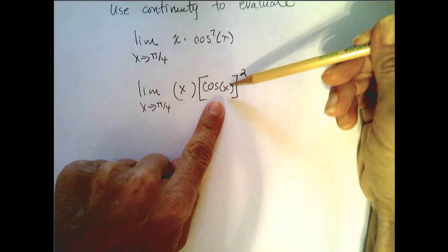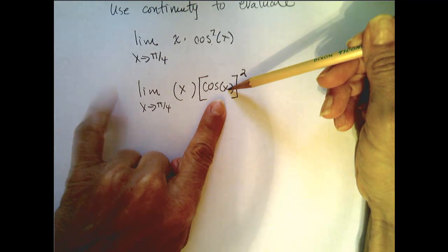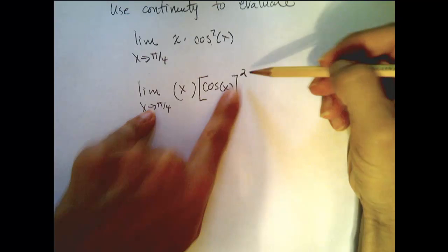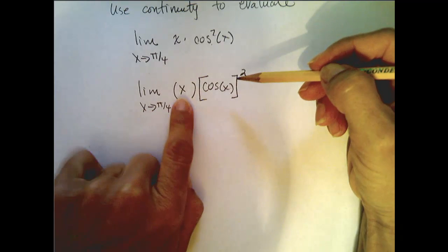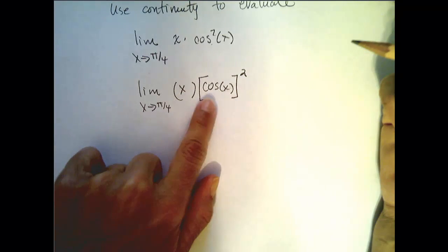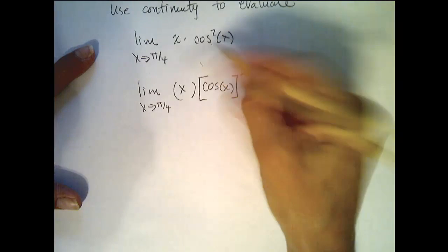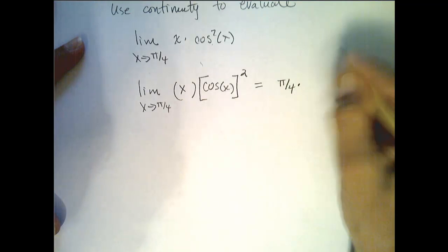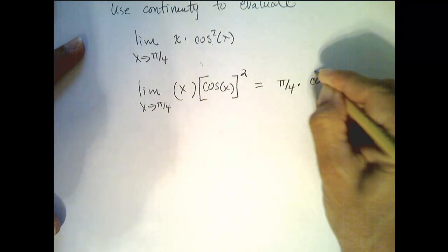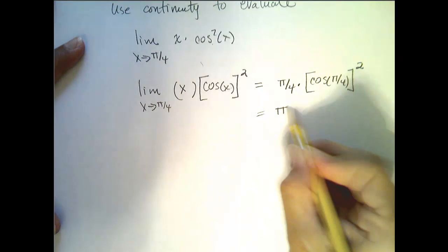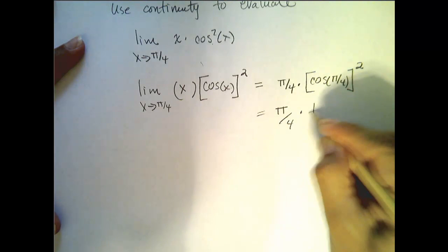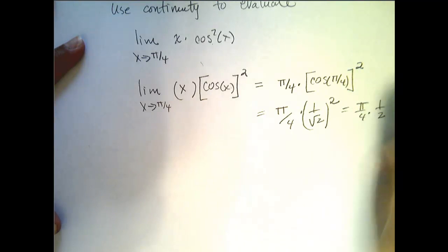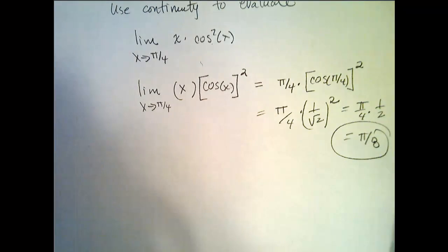The cosine of x is continuous everywhere, so it is certainly continuous at pi over 4, which means I can plug that in directly. The square function is continuous everywhere, the polynomial function is continuous everywhere, and so the product of these functions is continuous. So this equals pi over 4 times cosine of pi over 4, that quantity squared — which is pi over 4 times 1 over the square root of 2, squared — or pi over 4 times 1 half, giving a final answer of pi over 8.